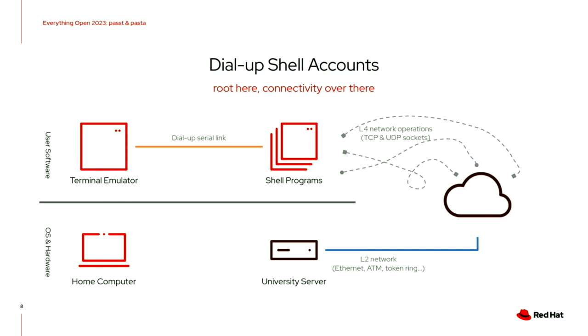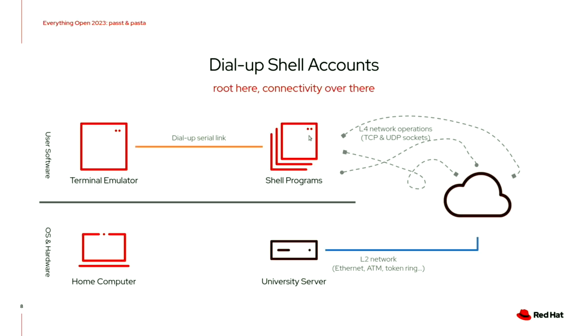ISPs are a bit uncommon at this stage, but some people had shell accounts. They don't have root on the university server, but they can run more or less whatever they want in user space. You've got root and control over networking on your home system but no connectivity. Over on the university side, you have network connectivity but you don't have root. So is there some way we can connect the two together?